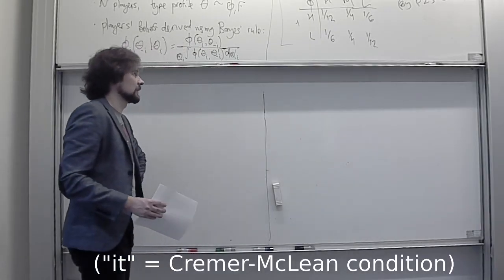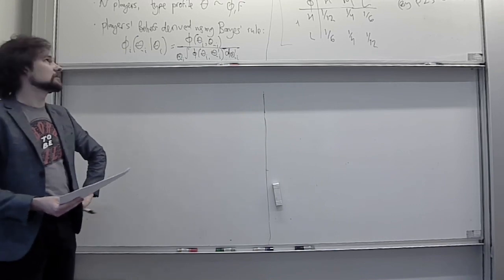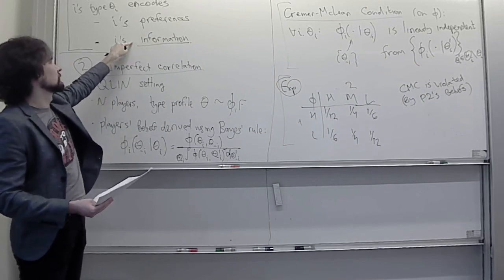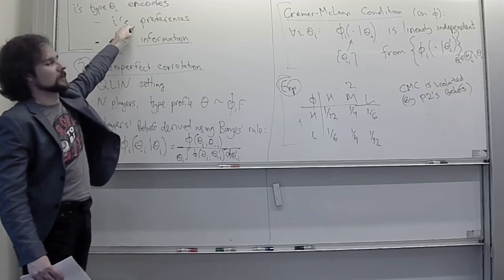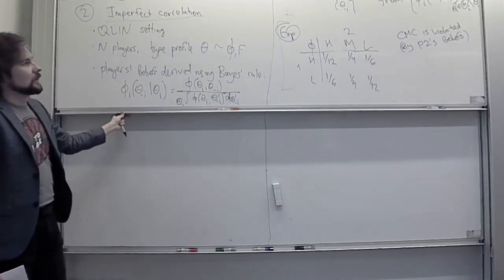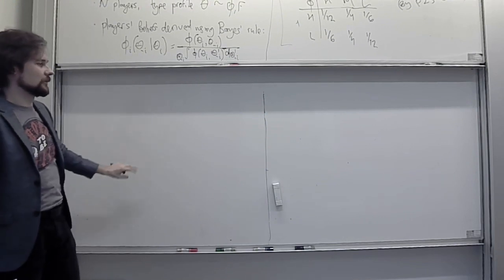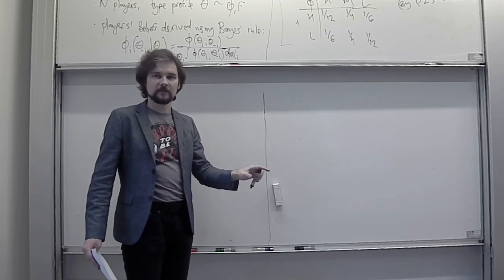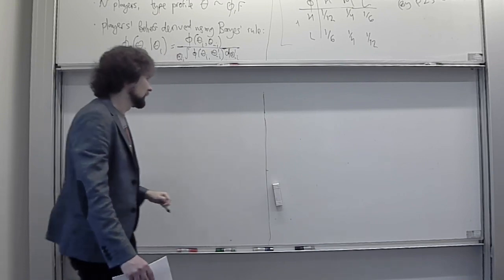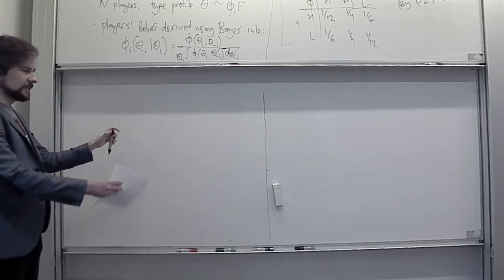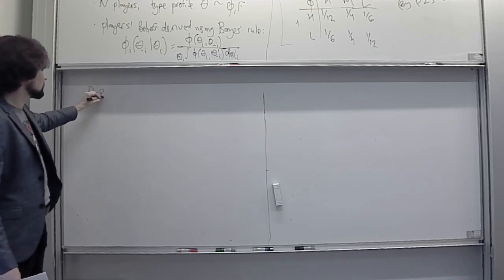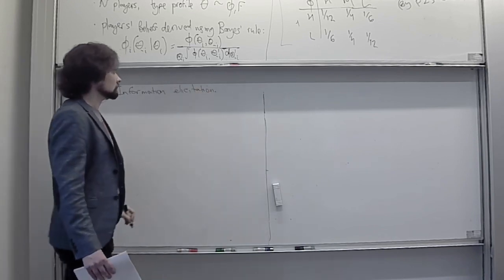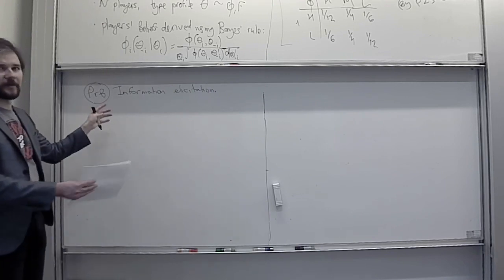So how does the Cramér-McLean condition help us? It allows us to focus on extracting player i's information rather than trying to extract both information about player i's beliefs and information about player i's preferences. We can focus directly on finding out what beliefs player i has about other players' types. I'd like to frame this as a separate problem: the information elicitation problem.